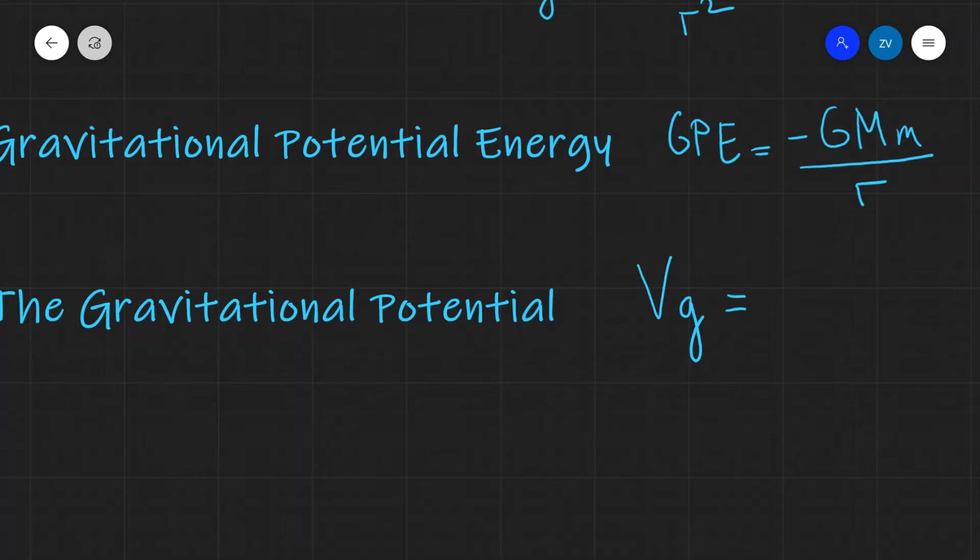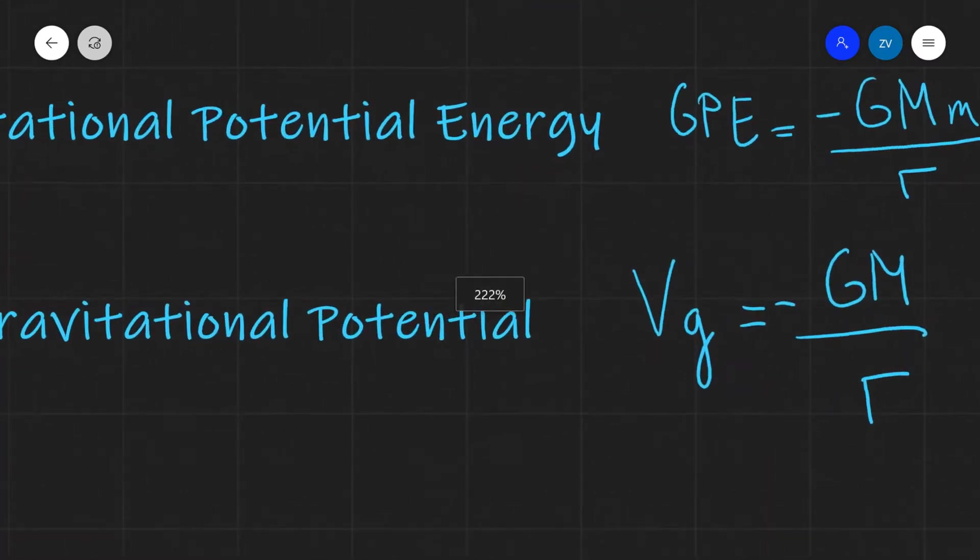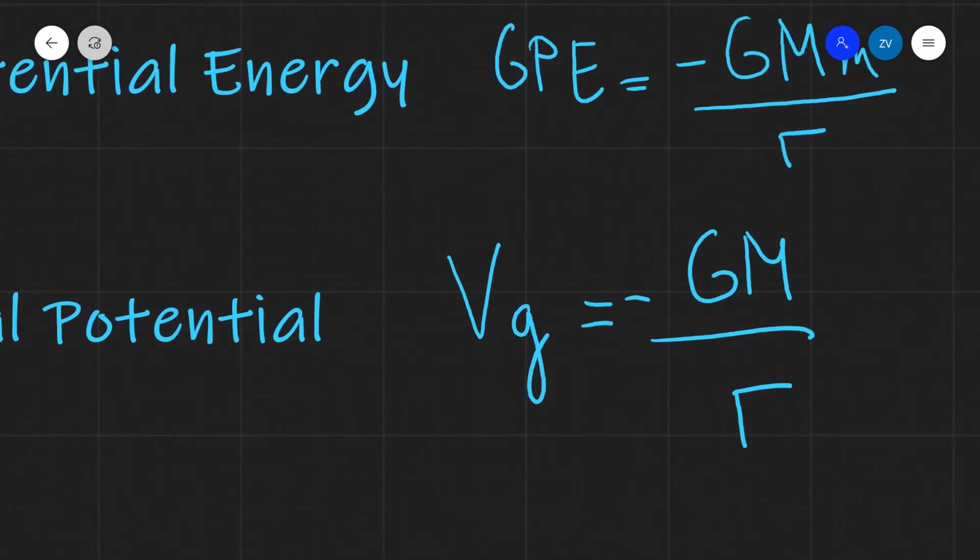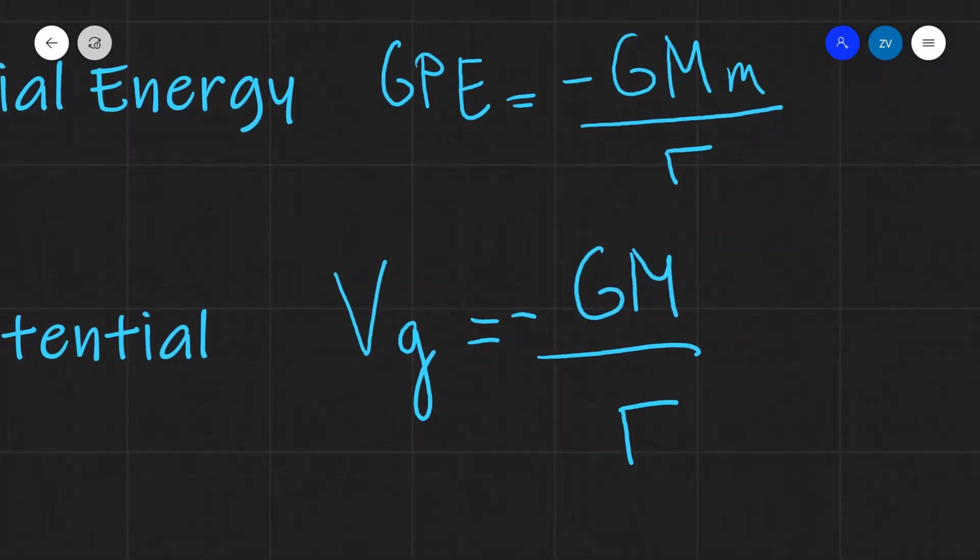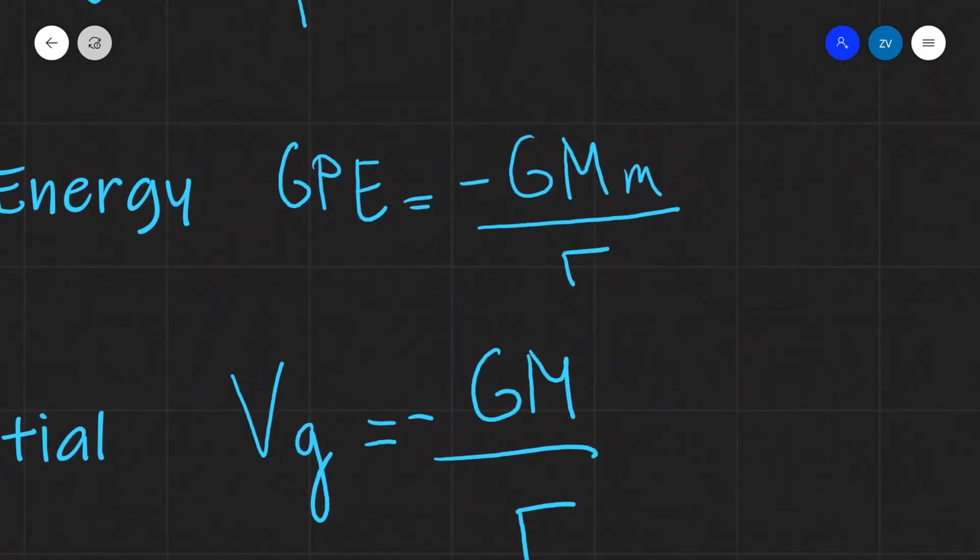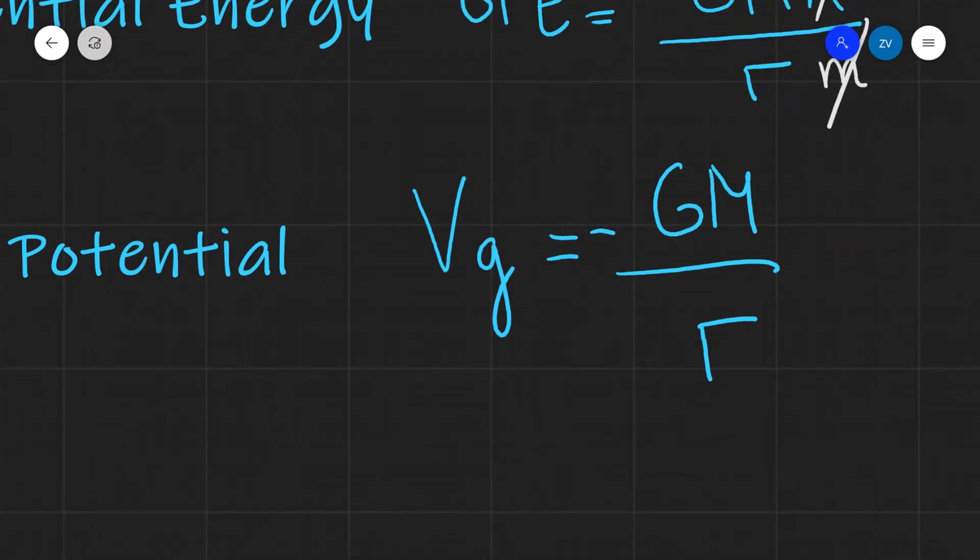The formula for it is minus GM over r. And it's critical because we can see that it differs from our gravitational potential energy by a factor of m. In fact, if we take our formula for gravitational potential energy and if we just divide this by m, this is going to get cancelled, and I'm going to get my equation for the gravitational potential.